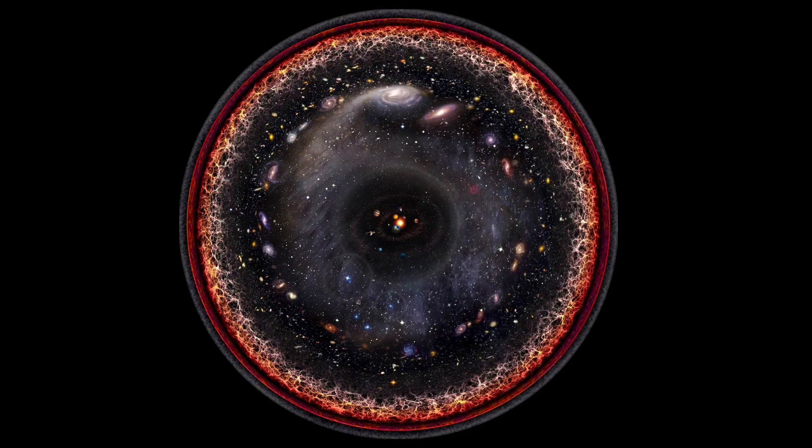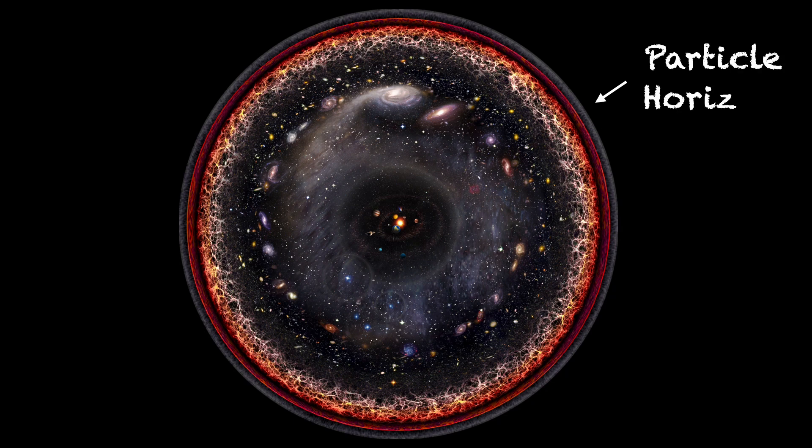The only thing that we can know is how big the size of the observable universe is. This would be the distance that light could have maximally traveled since the Big Bang. Sometimes this distance is also referred to as the particle horizon.